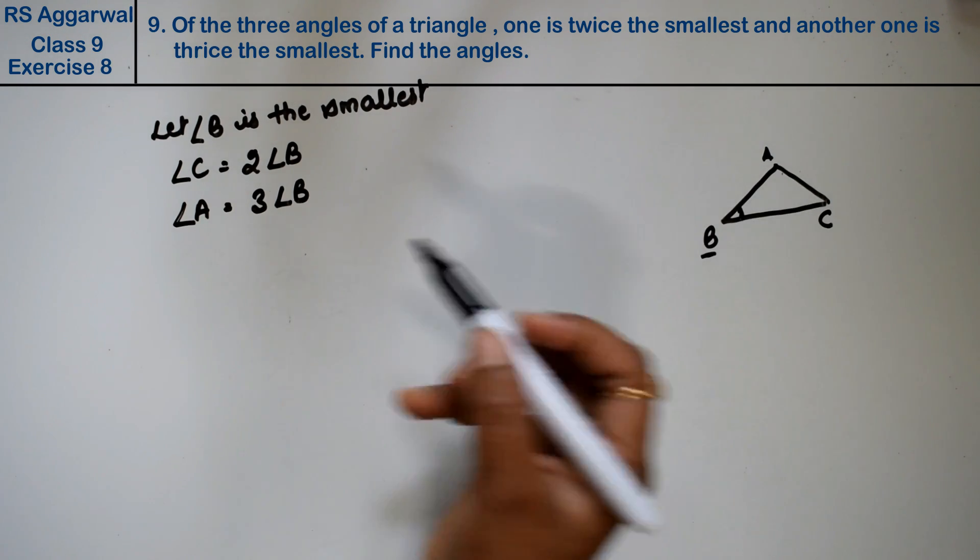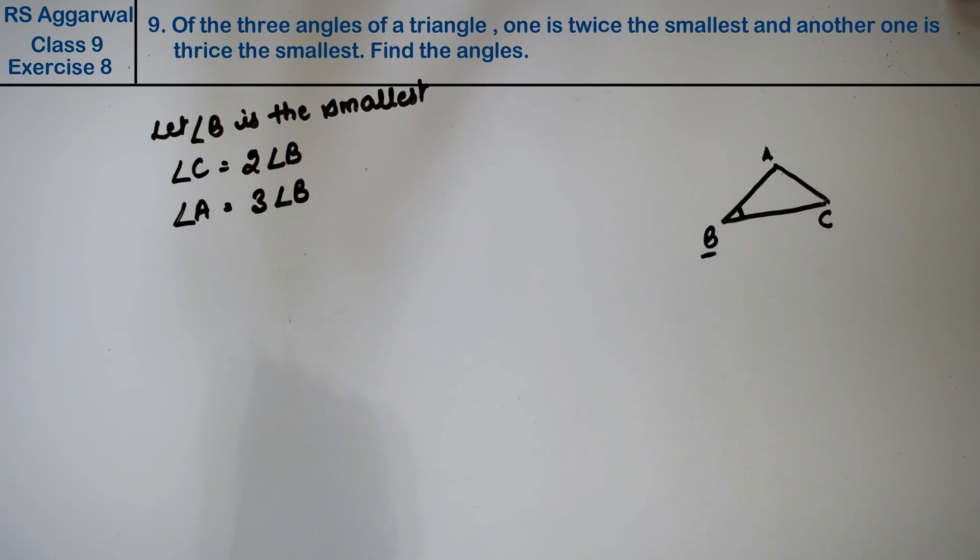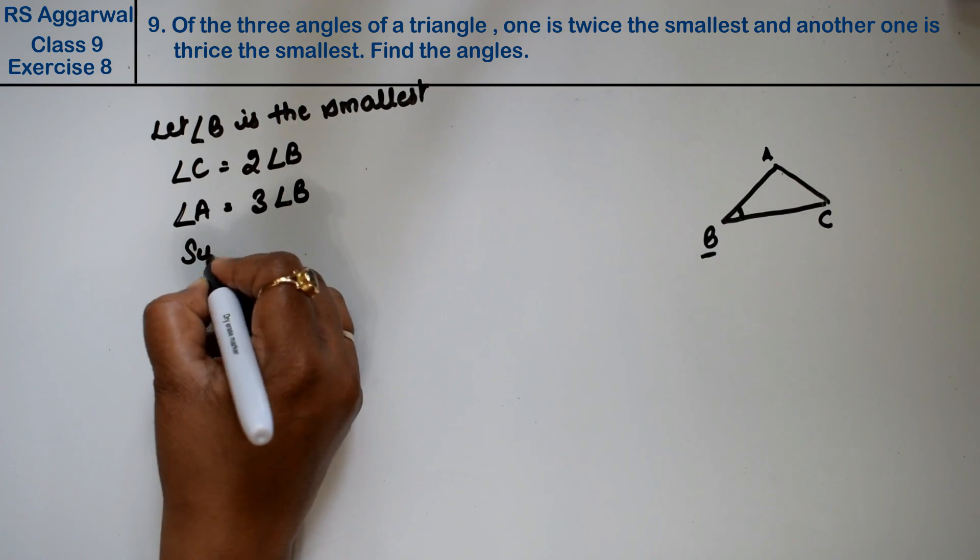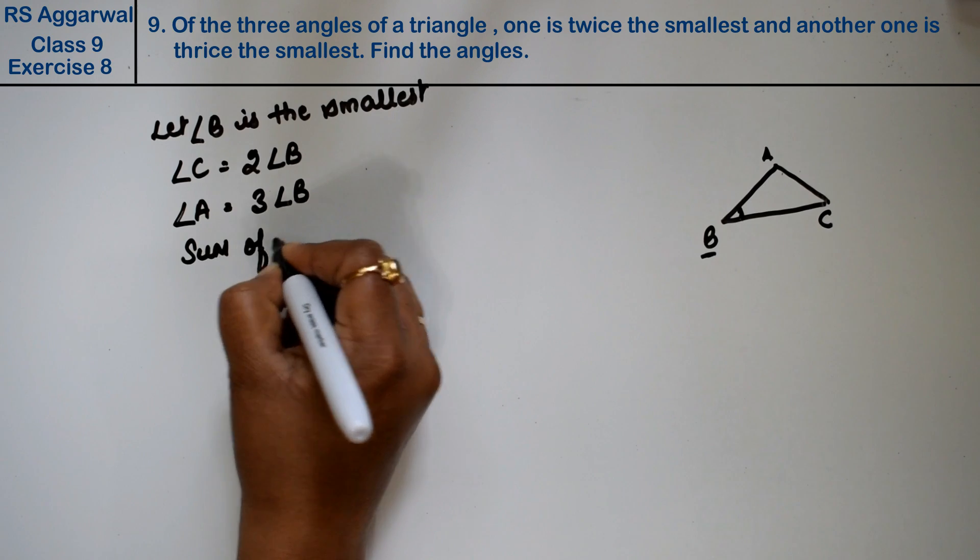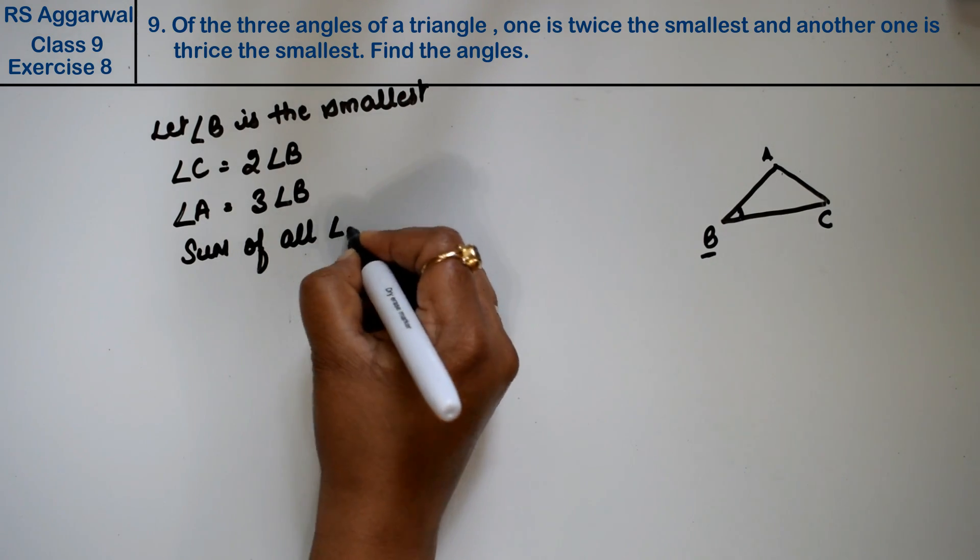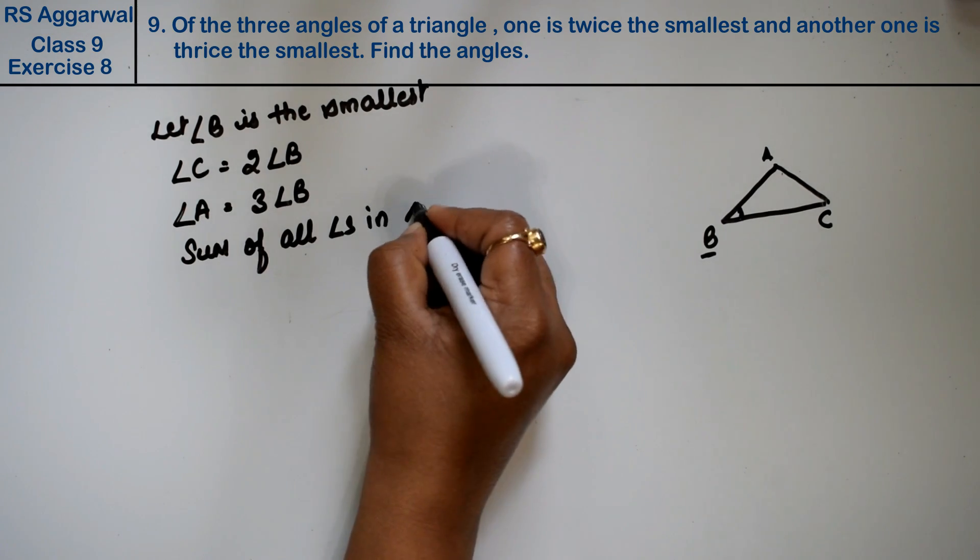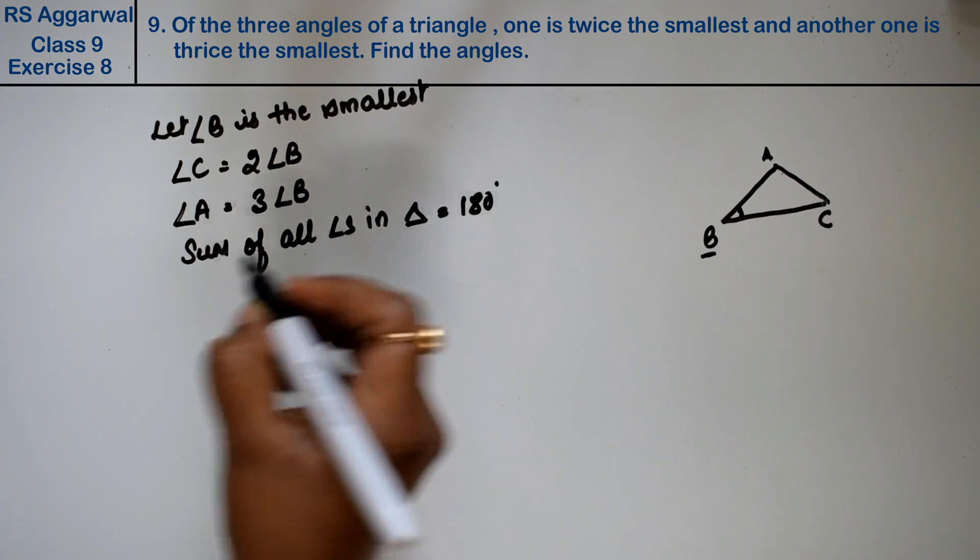Now we know the sum of all angles in a triangle is 180 degrees. So angle A plus angle B plus angle C equals 180.